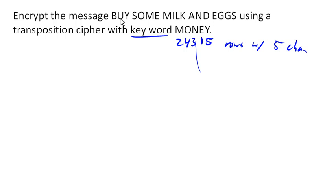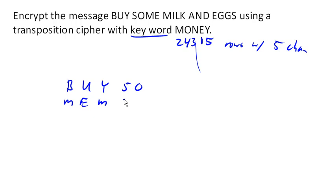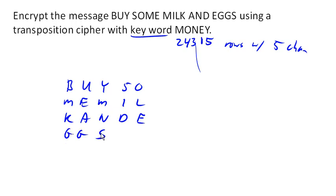We're going to start out by writing out our message in rows with five characters each. The message is 'buy some milk and eggs,' and then we're going to need to pad this with a couple of characters.